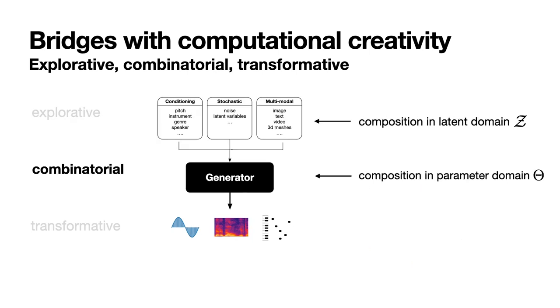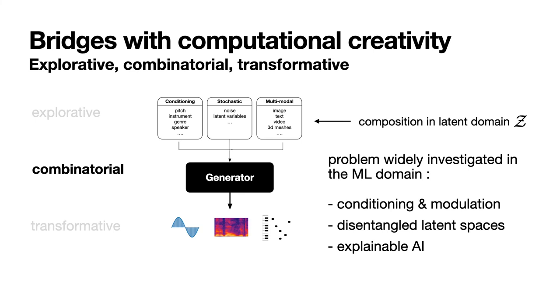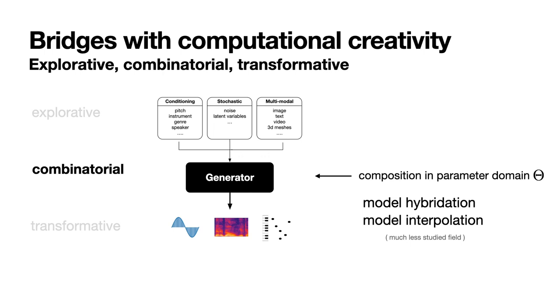Regarding combinatorial creativity, it could be also either in the latent domain or in the parameter domain. In the latent domain, this problem has been widely investigated in machine learning. Three different axes have been taken: whether conditioning and modulation, disentangled latent spaces, or explainable AI. In the parameter domain, combinatorial creativity would rather consist in model hybridization or model interpolation, that is directly addressed by our framework.